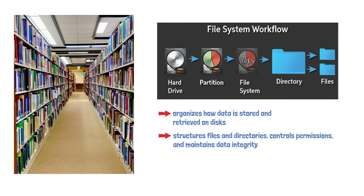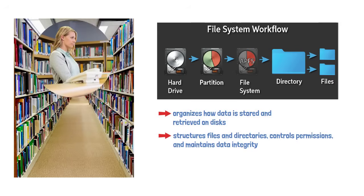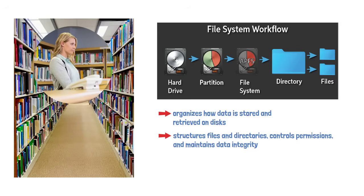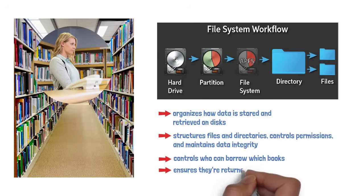It's like a well-organized library with books, your files, arranged in sections and shelves, your directories, with a catalog system that tracks where everything is located. The librarian, your file system, also controls who can borrow which books and ensures they're returned in good condition.